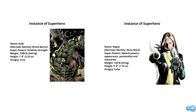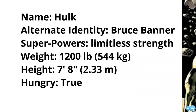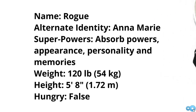Here we have two instances of the superhero class — one describing the Hulk and the other describing Rogue. For the Hulk, its data would include: name being Hulk, alternate identity being Bruce Banner, superpowers of unlimited strength, weight 1200 pounds, height 7 foot 8, and hungry. We can also think about operations like eating, jumping, leaping, or lifting. For Rogue, she still has a name, alternate identity, superpowers, weight, and height — but specific to her instance of the superhero class.